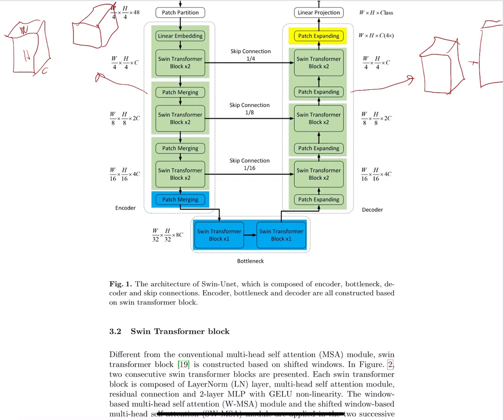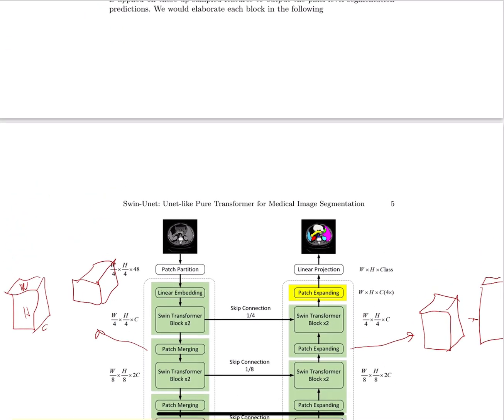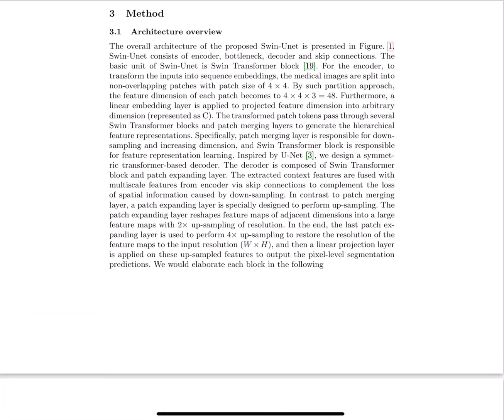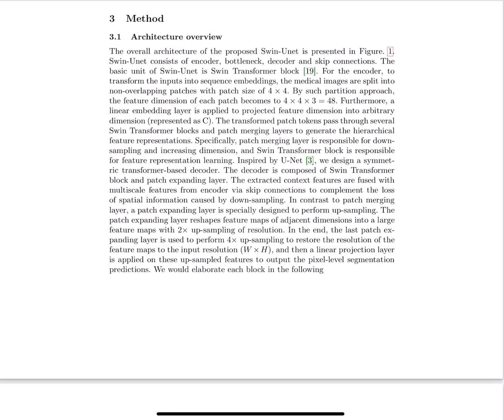And in between they have the Swin Transformer block. Those are classic Swin Transformer blocks and that's all they have as the new stuff. As they show here, they have 48 features in the beginning.